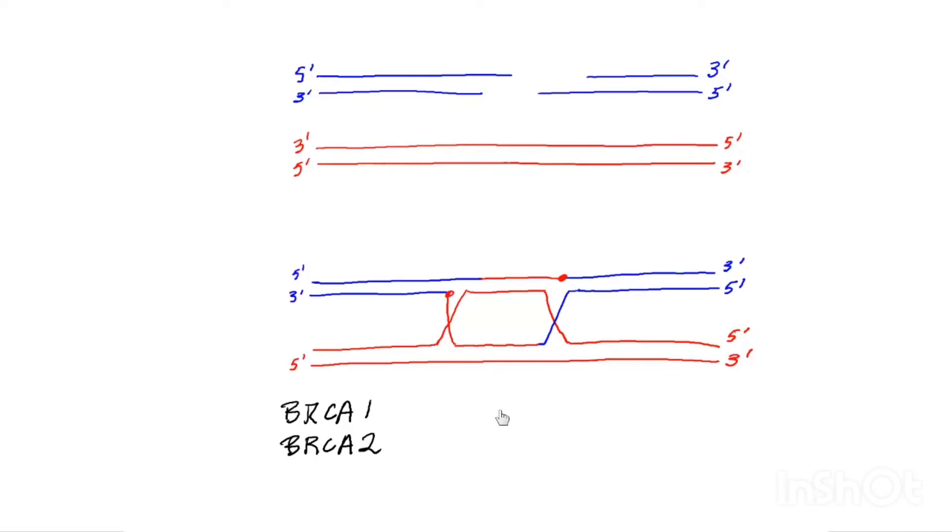And their involvement in homologous recombination is to load RAD51 onto the protruding single strands. And I'm going to draw some RAD51 molecules.